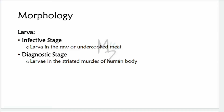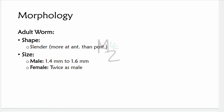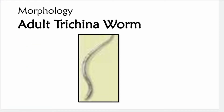Larvae in the striated muscles of the human body represent the diagnostic stage. The adult worm is slender, more so at the anterior end than the posterior end. The male is about 1.4–1.6 mm and the female is twice the size of the male. In the image, you can see the adult Trichina worm — its anterior side is more slender compared to the posterior side.